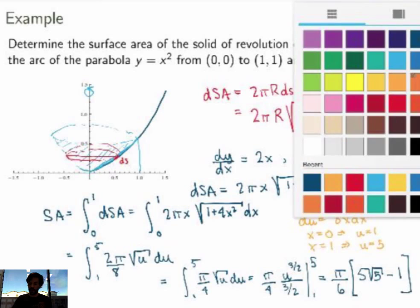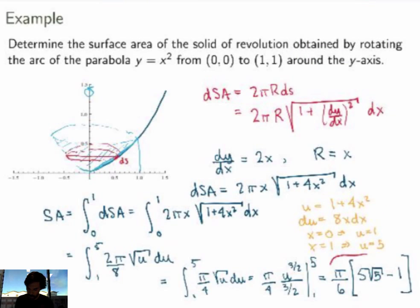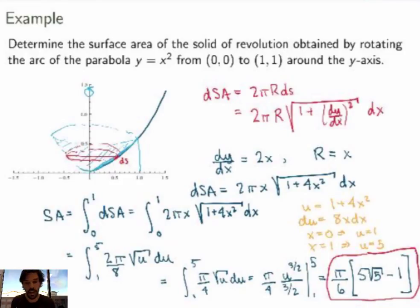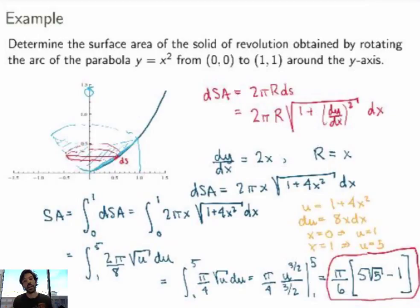So the final answer for the surface area of this solid is (π/6)(5√5 − 1). As I said, you could do the exact same calculation in terms of y — it's a good exercise and I encourage you to try it. We're going to do it in class, along with more examples, including proving that the surface area of a sphere really is 4πr², which is a pretty cool calculation.